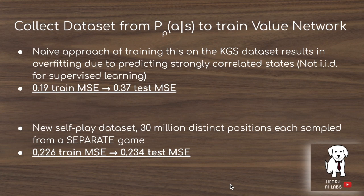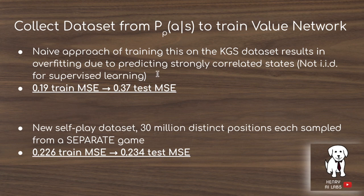The reinforcement learning policy network is used to train the value network, which predicts the winning probability of a given state. Training naively on the KGS supervised learning dataset causes heavy overfitting due to strongly correlated states in the same game — resulting in 0.37 training MSE but 0.9 test MSE. Instead, they construct a self-play dataset from 30 million distinct positions each sampled from a separate game, which results in much less overfitting.